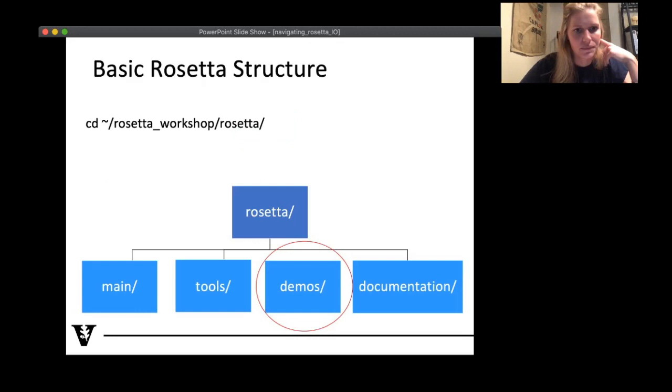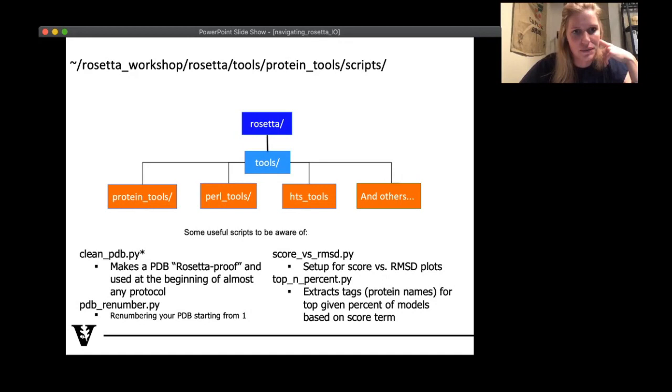You also have things like pdb_renumber if you need things to be renumbered appropriately. And then there's other things for potential analysis of score versus RMSD plots. You'll be seeing again, a number of these for analysis purposes. And then the top_N_percent, let's take the top N percent of output structures according to a particular score term. So these are a couple examples of things that are in there. These are primarily Python scripts if you want to read through those. Perl tools has things that are similar to protein tools. It's just written in Perl language. HTS tools, this stands for high throughput screen tools. This is useful if you're doing high throughput screen drug discovery protocols. Feel free to look in there and there's others. So feel free to browse around. But tools is primarily for short analysis, a quick analysis of Rosetta outputs, for example.